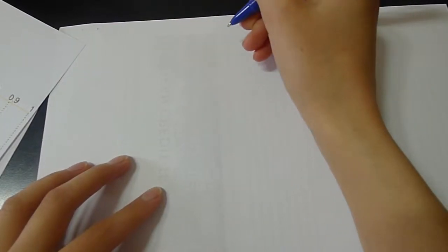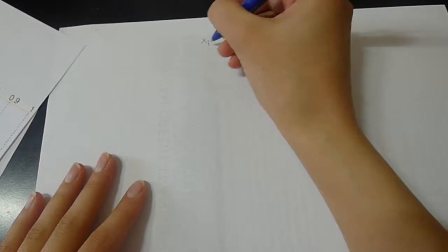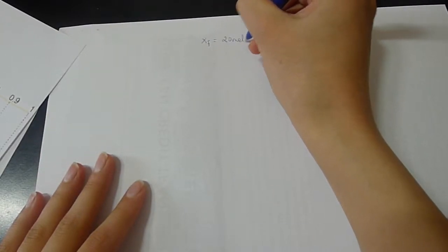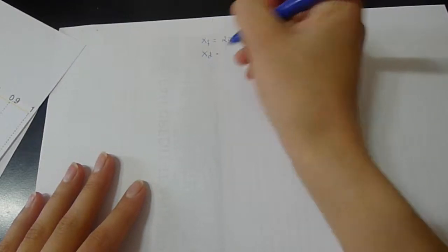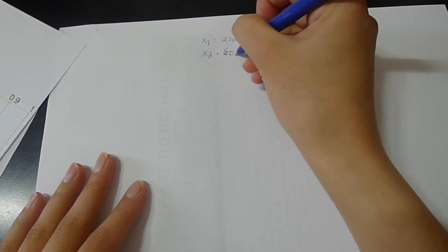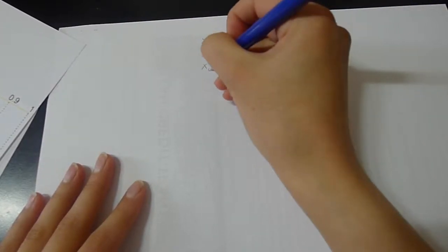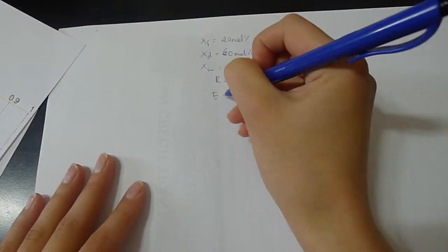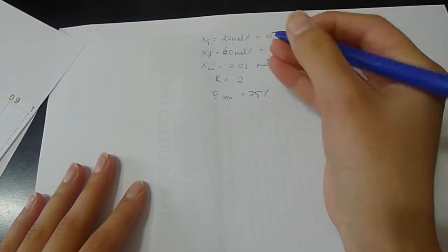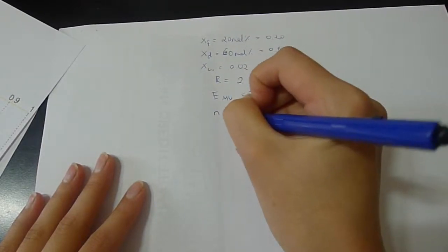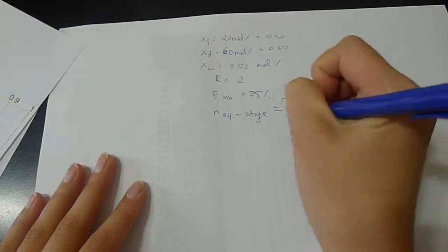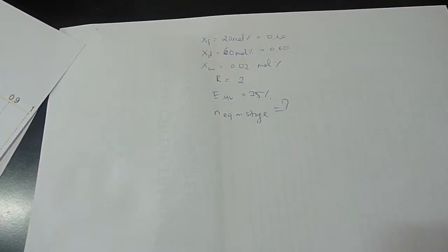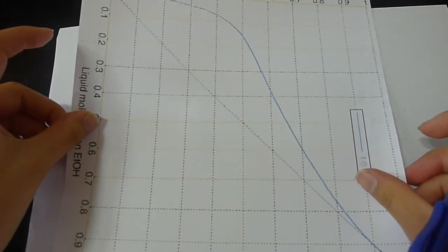So let's write down the knowns. So 20 mol% in the feed is coming in. So XF feed is 20 mol%. We can say this is 0.20. XD in the distillate is 60 mol%, which is 0.60. XW is 0.02 mol%. And reflux ratio is 2. EMV is equal to 75%. And it's asking us how many equilibrium stages there are. And this is an ethanol and water problem. So the graph looks like this.